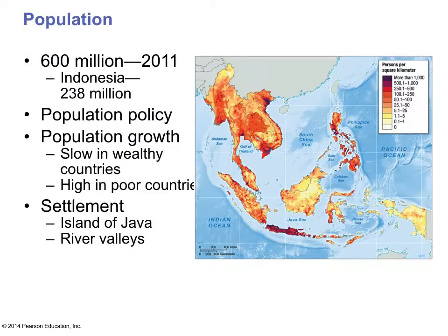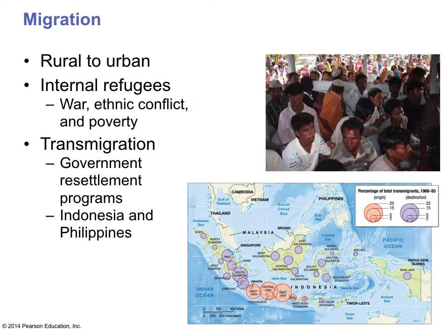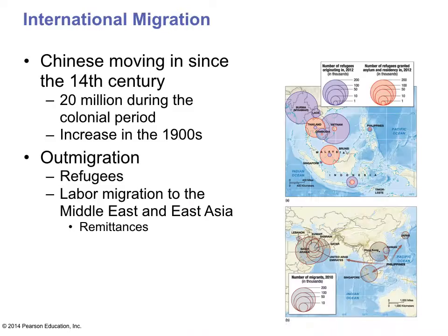In terms of population, Southeast Asia has about 600 million people — not as large as you would expect compared to East Asia and South Asia. One big area of interest is the movement of Chinese into this area: over 20 million migrated during the colonial period, and since the 1900s the Chinese have continued emigrating in, causing some ethnic conflict.